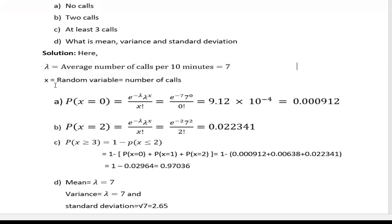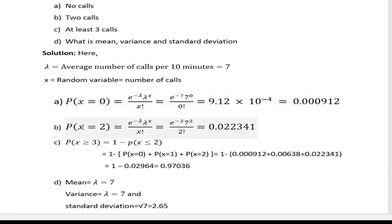For x equals zero (no calls), putting the values in the Poisson distribution formula — e to the power minus 7, times 7 to the power 0, divided by 0 factorial — using a calculator we get the result. For x equals 2 (two calls), putting the value in the Poisson distribution, by calculator you get 0.02234.